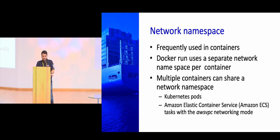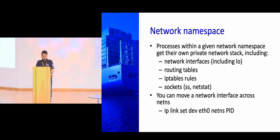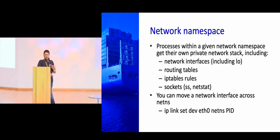Network namespaces are widely used in Kubernetes pods and ECS services. In ECS, there's a network mode called AWS VPC where a particular container gets its own ENI — network namespace is the function that comes into play there. Once you give a network namespace to a particular container, that container gets its own network space — its own IP, routing table, IP tables, and sockets. If you've done 'docker exec' into a container, you'll see eth0 with a local 172.x IP. When you come out, you see a different IP on your host system — that happens because of the network namespace.